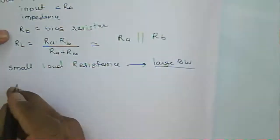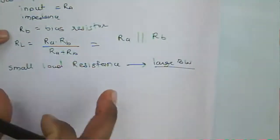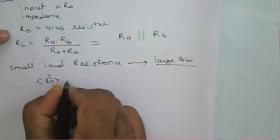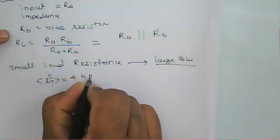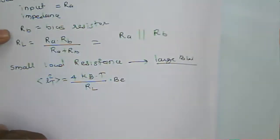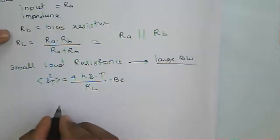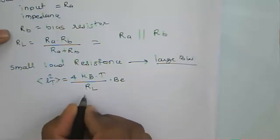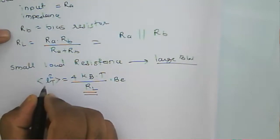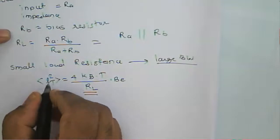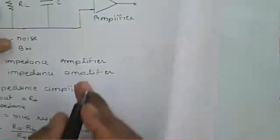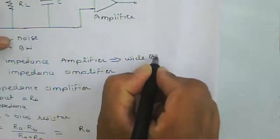With a small load resistance, the mean square of thermal noise equals 4K_B·T divided by R_L times the bandwidth. So for low load resistance, thermal noise will be large. However, a low impedance amplifier can be operated over a wide bandwidth.